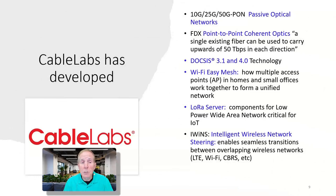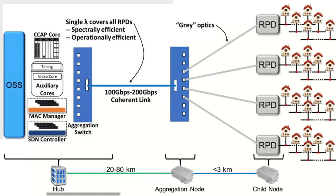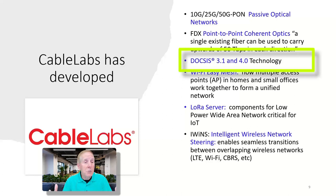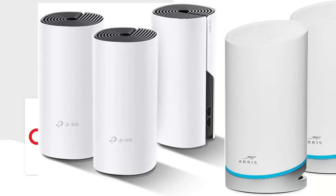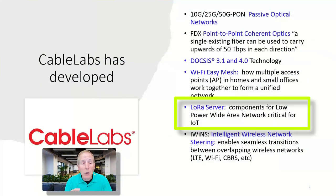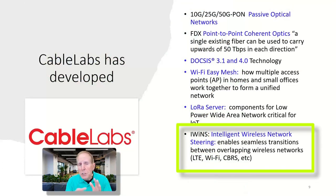Cable Labs is no slouch when it comes to engineering. They have developed the passive optical networks that run at 10, 25, and 50 gigabits, known as PON. They also develop point-to-point coherent optics where a single fiber can carry upwards of 50 terabits per second in both directions. They also helped develop DOCSIS for cable companies, cooperated with Wireless Alliance and developed Wi-Fi Easy Mesh, and worked on LOROS server for low-power wide-area networks.